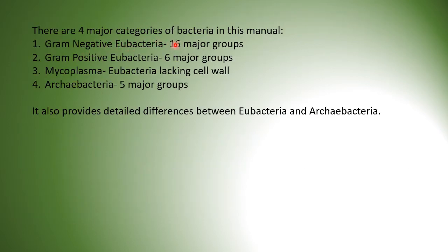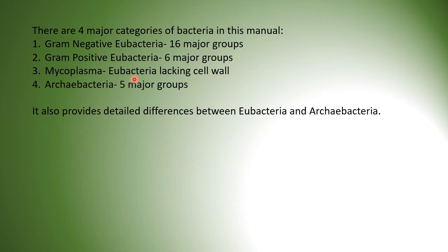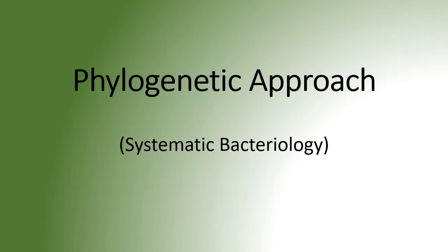There are four major categories of bacteria in this manual. First, gram negative eubacteria, which has 16 major groups. Then gram positive eubacteria, which has six major groups. Then comes mycoplasma — eubacteria that lack a cell wall. And finally, archaebacteria, which has five major groups. The manual also provides detailed differences between eubacteria and archaebacteria. That covers the phenetic approach.